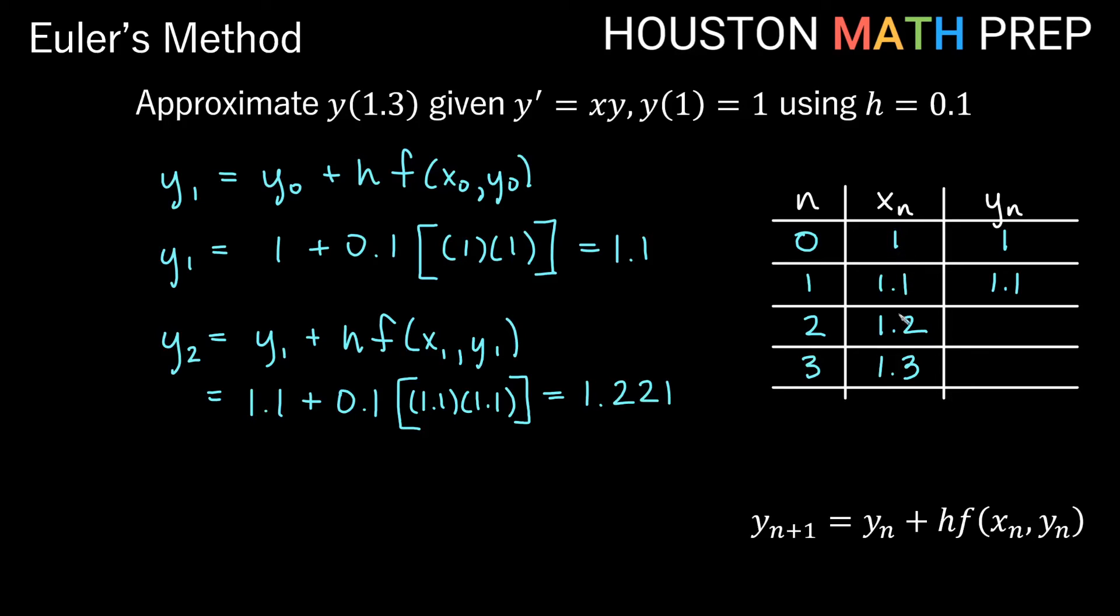So Euler's method is telling us that at an x value of 1.2 we get an approximation of 1.221. Let's go ahead and do our last approximation here. Y3 equals y2 plus our h times our function with x2 and y2 plugged in. So that will give us y2 1.221 plus 0.1 our h times the formula with x2 and y2 plugged in. So x2 was 1.2, y2 was 1.221 and if we type all this into a calculator here then we will get 1.36752 as our approximation for that one.